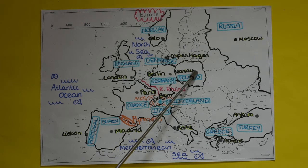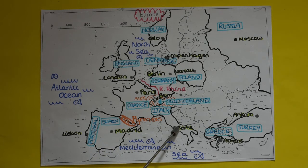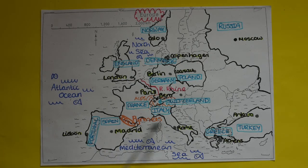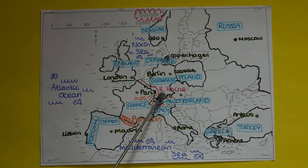The capital of France is Paris. The capital of Italy is Rome. The capital of Switzerland is Bern. The capital of Portugal is Lisbon. The capital of Spain is Madrid. The capital of Greece is Athens and the capital of Turkey is Ankara. You also need to know that the river Rhine flows out from Switzerland.